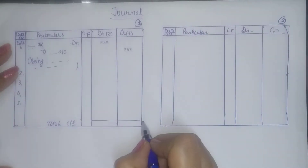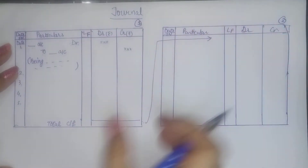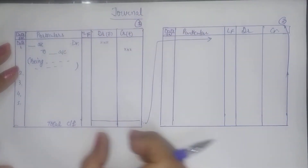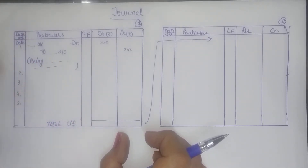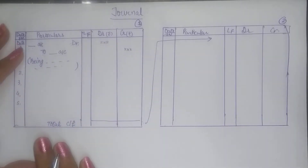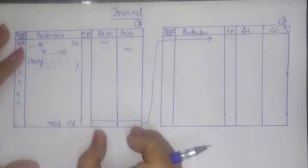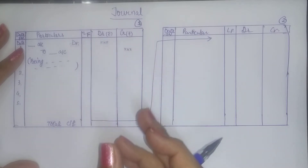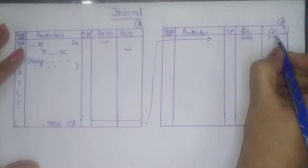The benefit of totaling is that when you total, you can see how much is debit and how much is credit. Every transaction has two equal effects — one goes to debit and one goes to credit. So our total must be equal. If the totals don't match, you check where the mistake is — maybe an amount was written incorrectly or there is a totaling error. And the same balance you bring to the next page is called total brought forward.